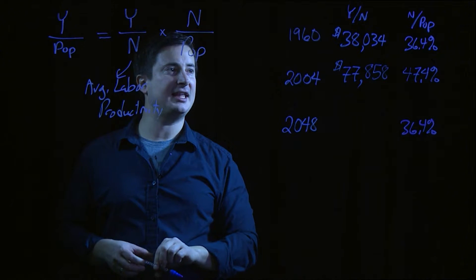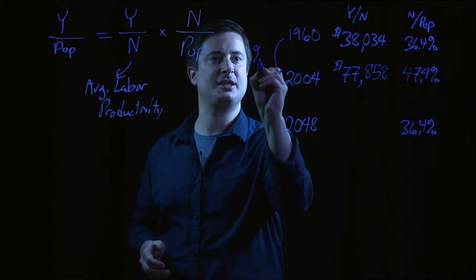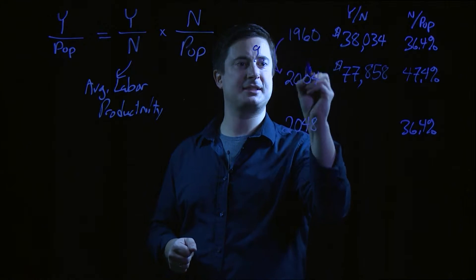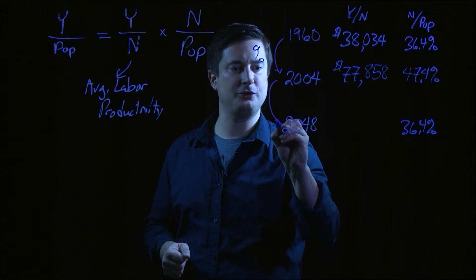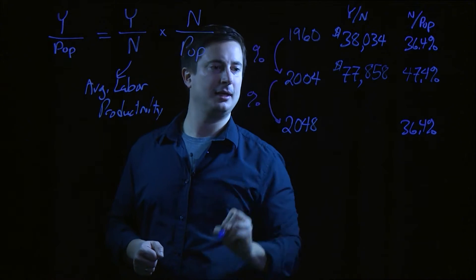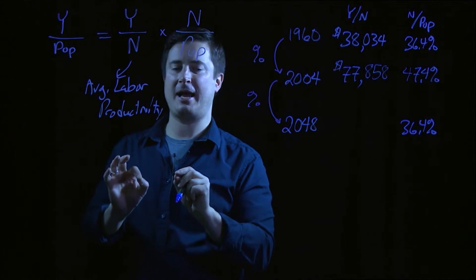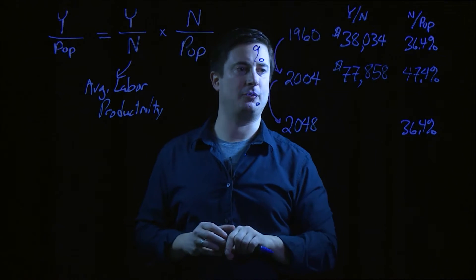If we think that labor productivity increases the same percentage terms from 1960 to 2004, as it will do between 2004 and 2048, this allows us to back out exactly what is GDP per capita expected to be in 2048.